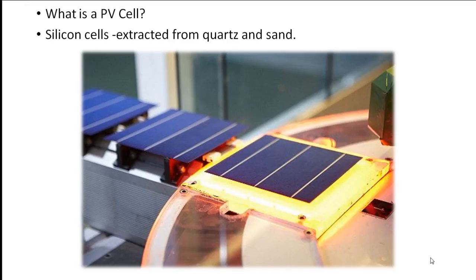Most solar cells in use today are made from one of the most abundant materials on the planet, silicon, which is extracted from quartz and sand. Like all atoms, silicon atoms contain electrons that orbit around the central nucleus that contains protons and neutrons.